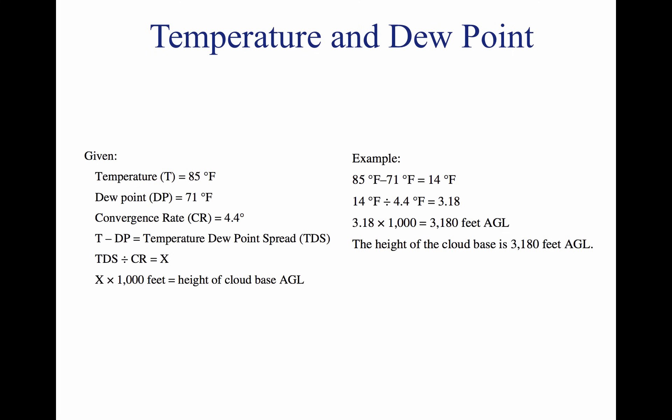As moist, unstable air rises, clouds often form at the altitude where temperature and dew point reach the same value. When lifted, unsaturated air cools at the rate of 5.4 degrees Fahrenheit per thousand feet, and the dew point temperature decreases at the rate of 1 degree Fahrenheit per thousand feet. This results in a convergence of temperature and dew point at a rate of 4.4 degrees Fahrenheit. Apply the convergence rate to the reported temperature and dew point to determine the height of the cloud base.